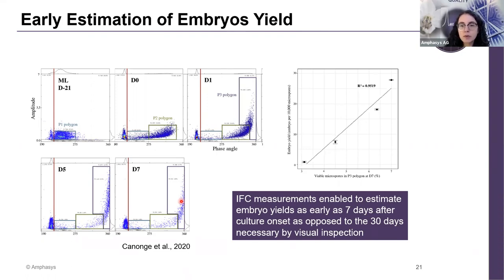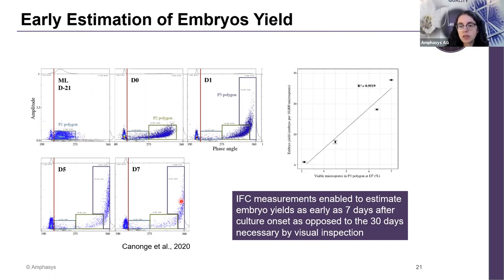Therefore, if you can assess very early on whether your culture is going to lead to embryos and even quantify that roughly, you can adjust much better — for example, starting with a higher amount of input material or even changing conditions during the culture process.